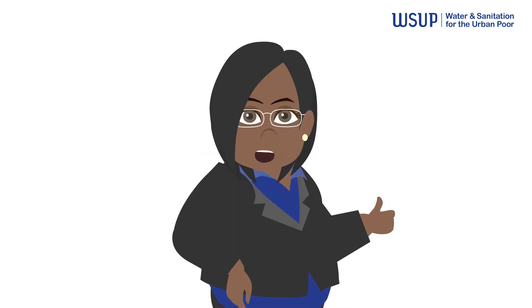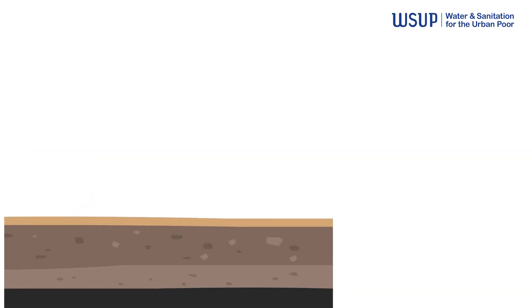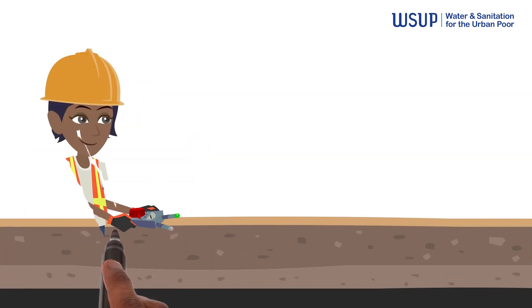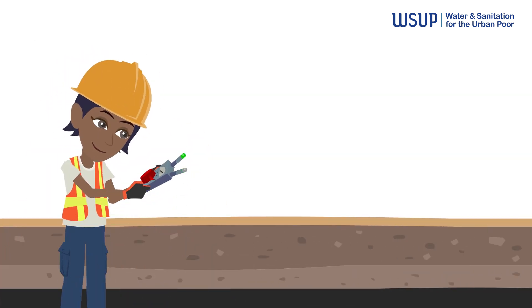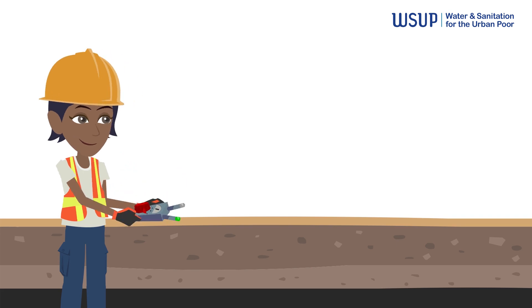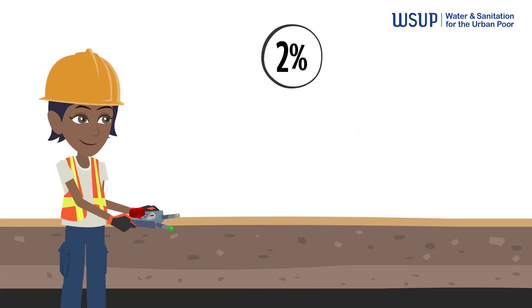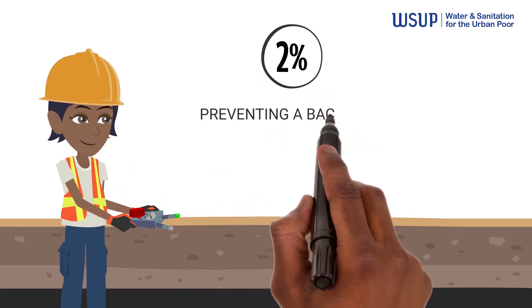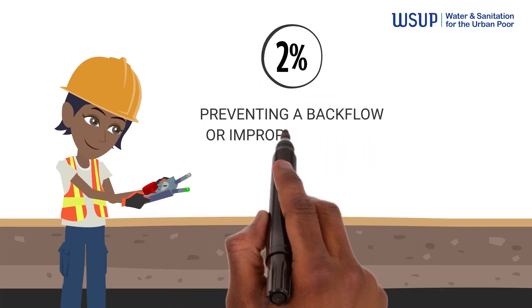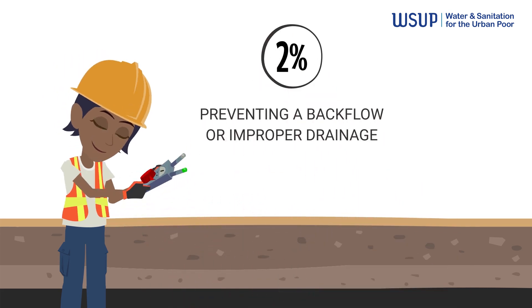Excavation marks the beginning of trenching. It is crucial to conduct a thorough survey to maintain the proper slope, as sewer systems rely on gravity flow. A two percent slope is ideal, and any deviation can lead to backflow or improper drainage.